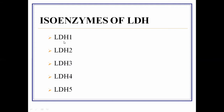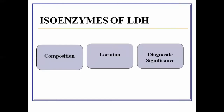LDH1 has the fastest mobility and LDH5 has the slowest mobility, moving from cathode towards the anode. In this lecture, we will study each isoenzyme's composition, tissue location, and diagnostic importance.